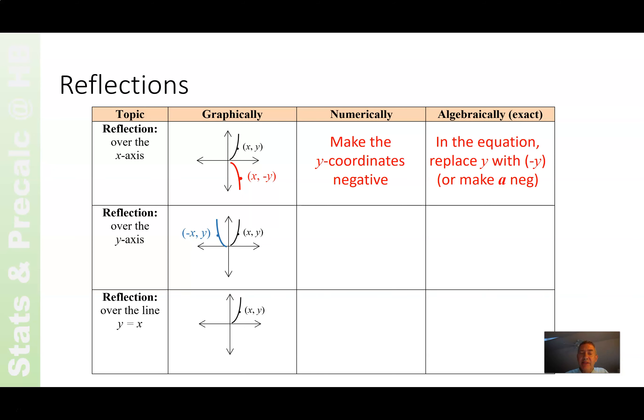If you reflect over the y-axis, on the other hand, the x-coordinate changes, but the y-coordinate stays the same. So, make the x-coordinates negative in the equation. Replace x with the opposite of x. Or, make b negative in the equation. Good.